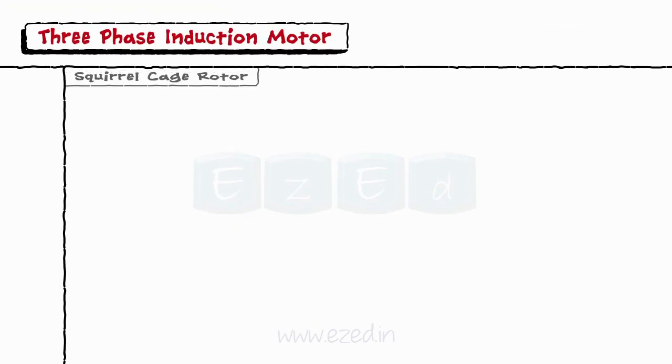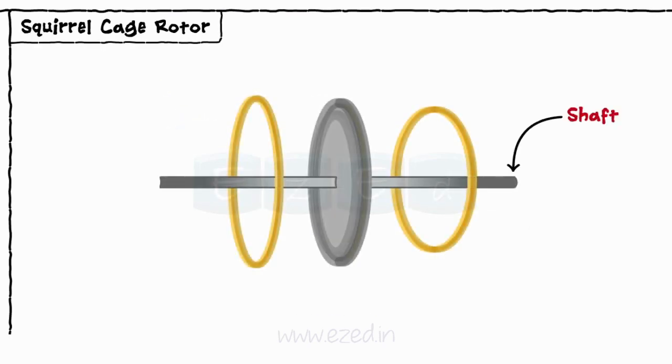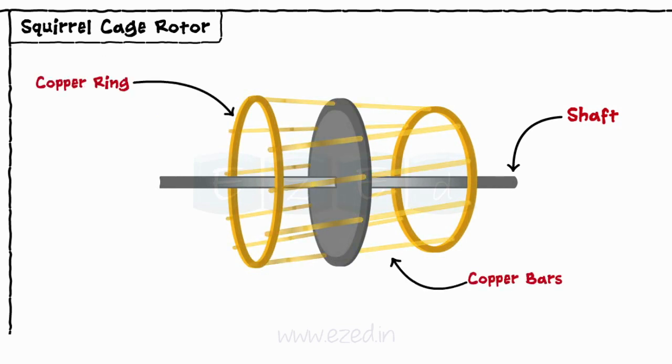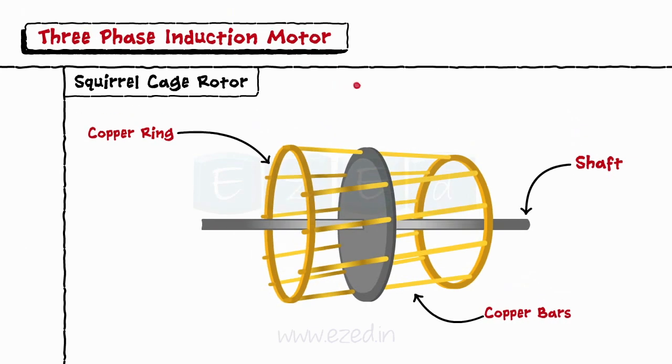The squirrel cage rotor is mounted on a central rod called a shaft. It consists of a cylindrical body having multiple slots on it. The copper bars that act as conductors are mounted on these slots. Once constructed, this structure looks like the cage of a squirrel. Hence, the name squirrel cage rotor.